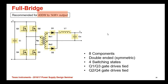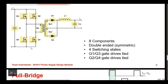Thanks to Texas Instruments for making such a beautiful application note. A full bridge converter is basically recommended for power ratings of 400 watts to 1 kilowatt and above. The circuit has four MOSFETs Q1, Q2, Q3, and Q4, and two diodes D1 and D2.